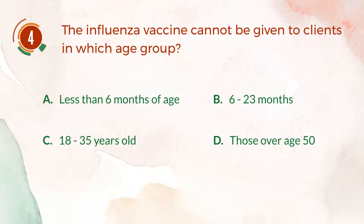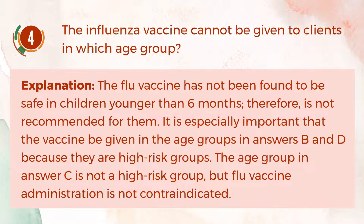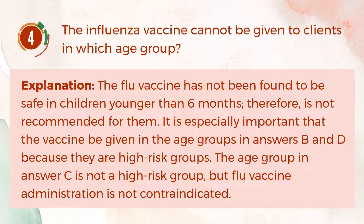The correct answer is A, less than 6 months of age. Explanation: The flu vaccine has not been found to be safe in children younger than 6 months; therefore, it is not recommended for them. It is especially important that the vaccine be given in the age groups in answers B and D, because they are high-risk groups. The age group in answer C is not a high-risk group, but flu vaccine administration is not contraindicated.